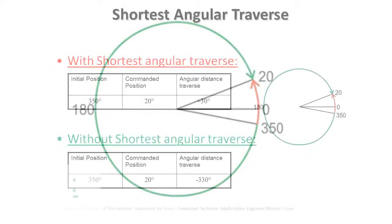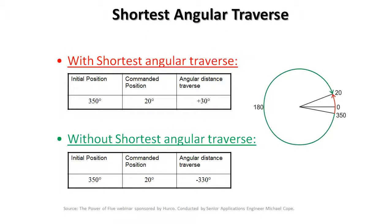However, there are many instances where I can't go that direction because of features in the part that I can't violate. Maybe I have a clamp or some kind of obstacle between 350 and 20 degrees. In that case, I would be forced to take the longest path, going negative 330 degrees to go from 350 around to 20.